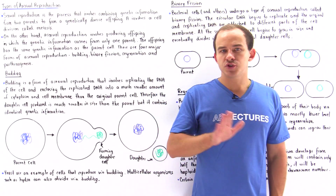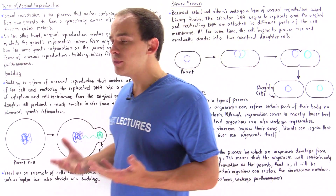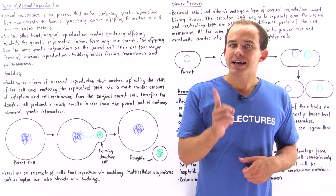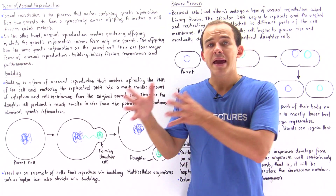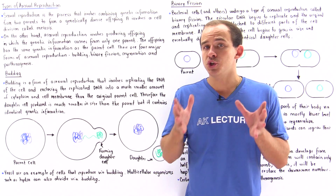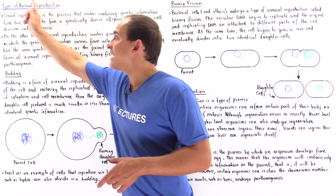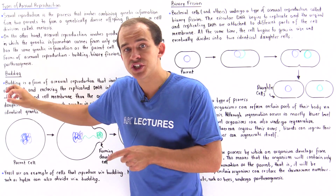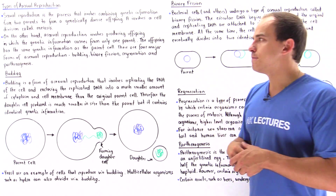Organisms reproduce in one of two ways to form offspring. One type is sexual reproduction, which humans and other animals undergo. In sexual reproduction, we combine the DNA — the genetic information from the male parent and the female parent — to produce an organism whose genetic information is unique, different from either parent. This is because sexual reproduction involves meiosis, which scrambles and diversifies the genetic information of the offspring.